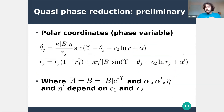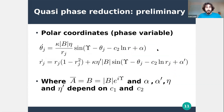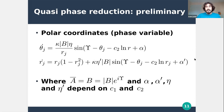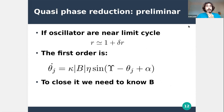The first step of quasi-phase reduction is to change from complex variables to polar variables — phases and radial variables. Here the mean field is redefined as b, and constants alpha, alpha-prime, eta, and eta-prime depend on c1 and c2. This pair of equations is still exact. The reduction assumes oscillators stay near the limit cycle, which happens if the coupling kappa is small or if the mean field is near zero.